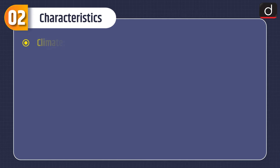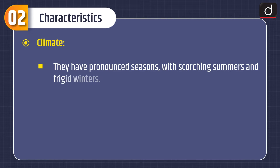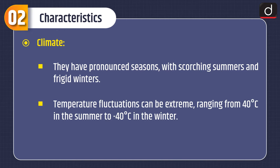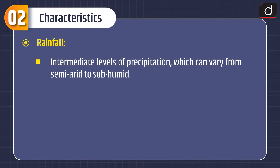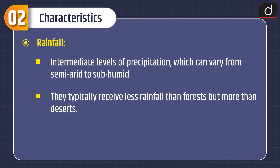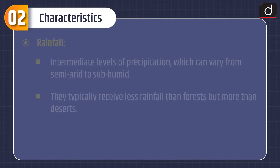Moving on to characteristics. Climate: grasslands have pronounced seasons with scorching summers and frigid winters. Temperature fluctuations can be extreme, ranging from 40 degrees Celsius in summer to minus 40 degrees Celsius in winter. Rainfall: intermediate levels of precipitation varying from semi-arid to sub-humid. They typically receive less rainfall than forests but more than deserts.